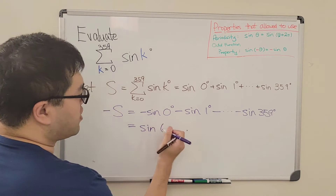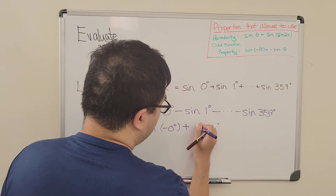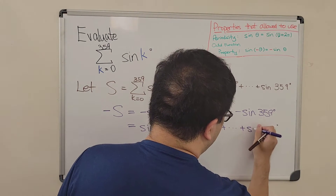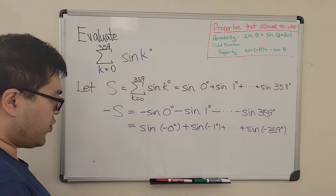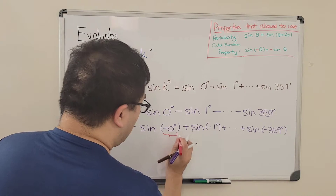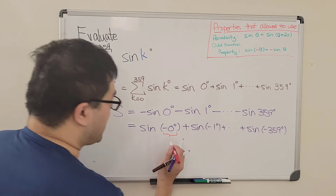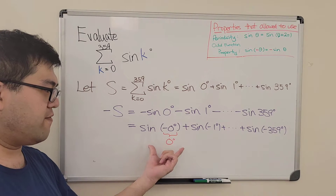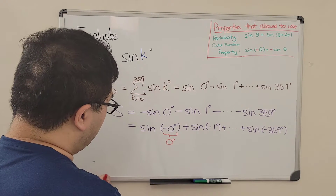Using the odd function property, negative sine of θ becomes sine of negative θ. So we get sine of negative 0 degrees plus sine of negative 1 degree, all the way to sine of negative 359 degrees. Note that sine of negative 0 degrees is just sine of 0 degrees, since negative zero equals zero.